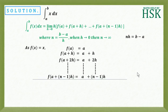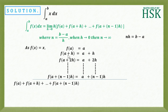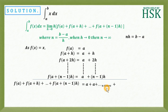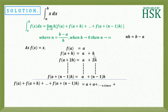Now we take the total of these terms: f(a) + f(a+h) + f(a+2h) + ... + f(a+(n-1)h). This equals a + a + a (n times) plus h + 2h + ... + (n-1)h, because the first term contains no h and it starts from the second term, so we get h + 2h + ... + (n-1)h.